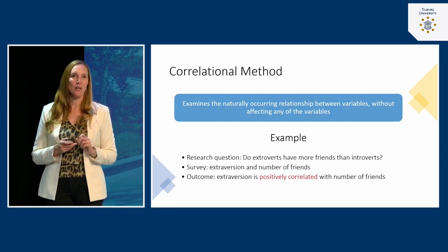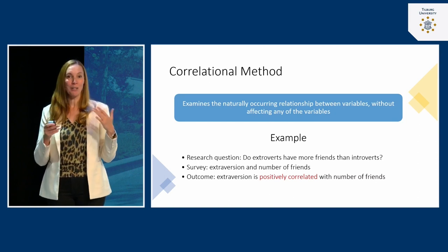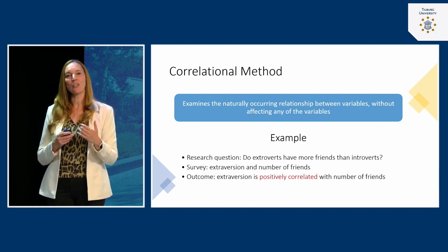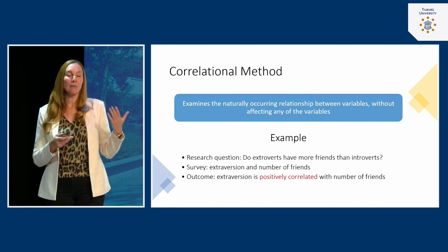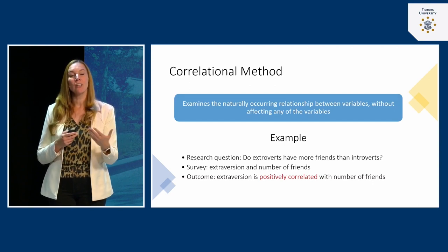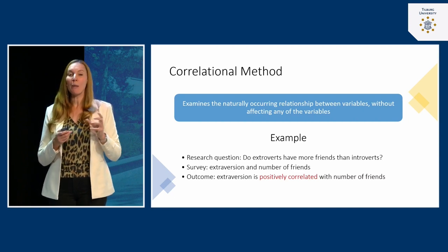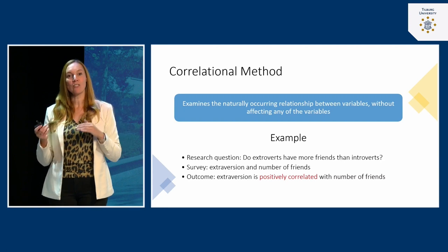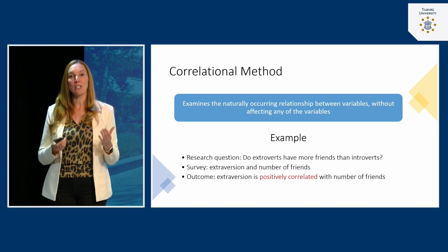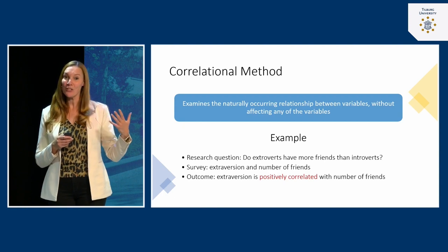Let me clarify this by giving you an example of correlational research. Let's imagine you have the research question: do extroverts have more friends than introverts? You're probably familiar with the trait extroversion — some people are more extroverted and some more introverted. You might think that people who are more extroverted have an easier time connecting to others and making new friends, so your prediction would be that extroverts have more friends than introverts.